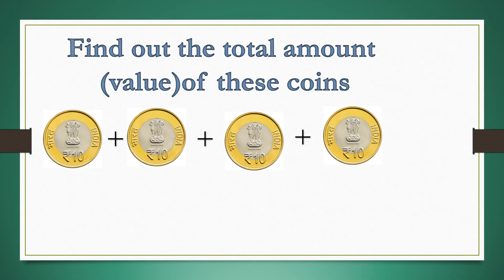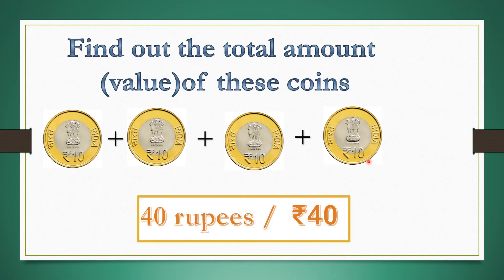Here we see that there are four 10 rupees coins. Let us add these 10 rupees coins together: 10 plus 10 is 20; 20 plus 10 is 30; 30 plus 10 is 40. So, the total is 40 rupees.